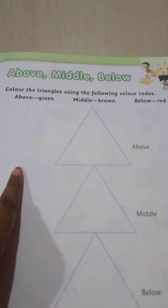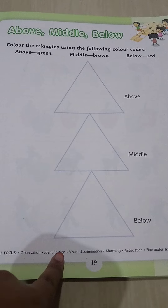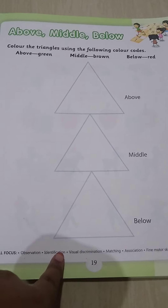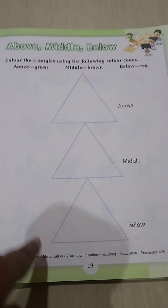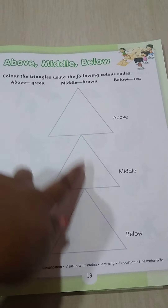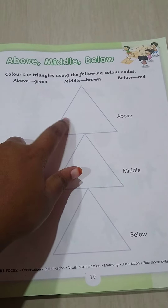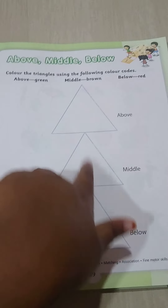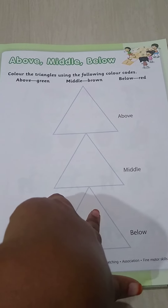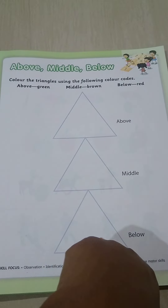So, here we are going to do a workbook activity. Above, middle and below we have three triangle shapes. Color the triangles using the following color codes. The first triangle is above, the second one is middle, and the third one is below. Above triangle, color it using green color crayon. The middle one, brown color crayon. And the below one, red color crayon. So, above is green, middle is brown, and below is red color.